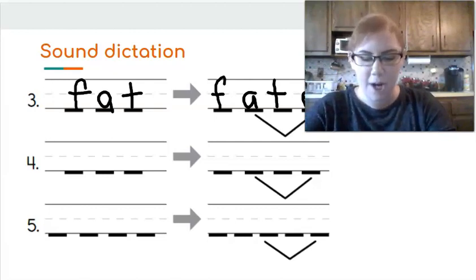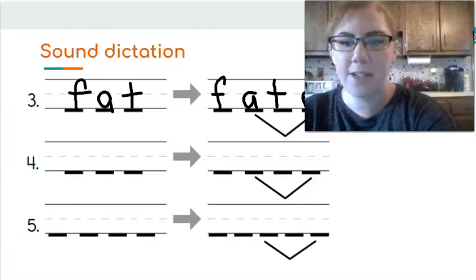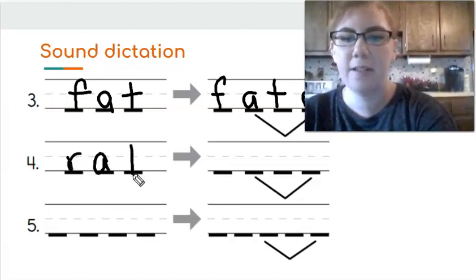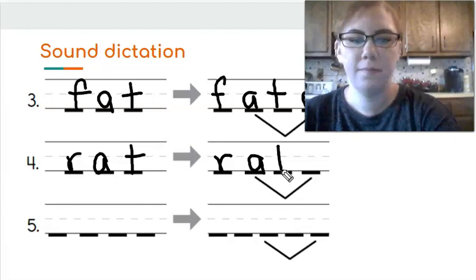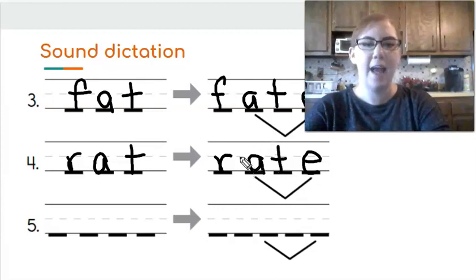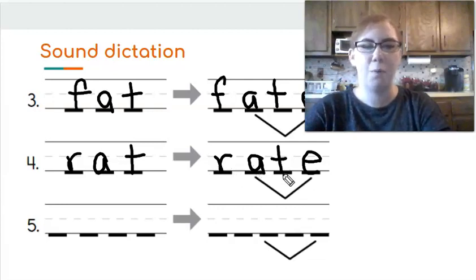The next word is rat. Write the word rat. R, A, T. Now add an E at the end. That magic E makes the A say A. Now the word is R, A, T, E, rate.